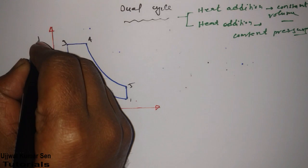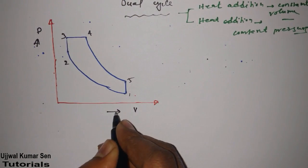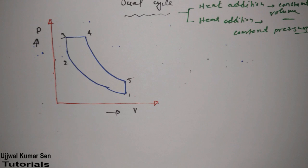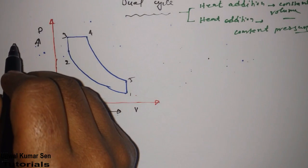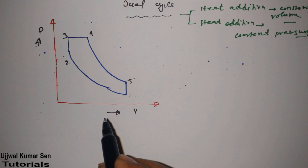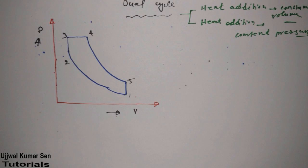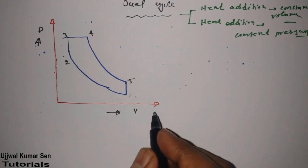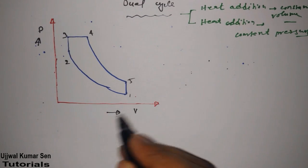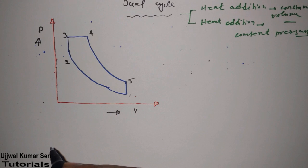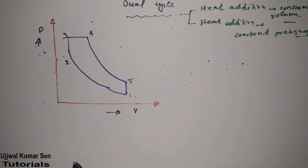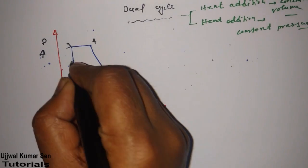In the PV diagram, we call it a PV diagram — P is pressure and V is volume. Many students confuse V for velocity, but remember: V here stands for volume, not velocity. The Otto cycle is also known as the constant volume cycle, which confirms that V means volume.